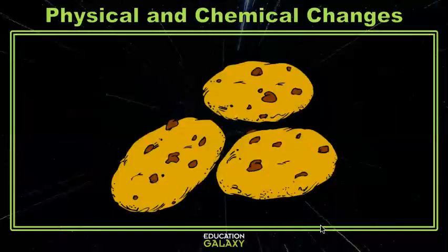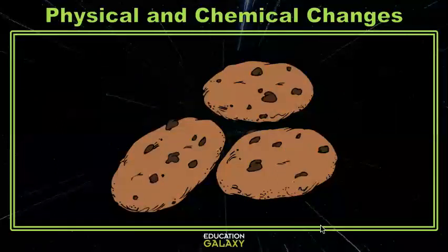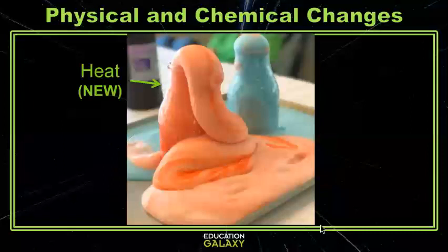If I were to bite into the cookie once they've come out of the oven, I'd be able to tell that they tasted different and that they've changed color. This is a chemical change. Any type of chemical reaction is also a chemical change. If you've ever made elephant toothpaste in a lab — well, it's not really toothpaste, but it's a chemical reaction that creates colored foam and heat — it's another example of a chemical change.